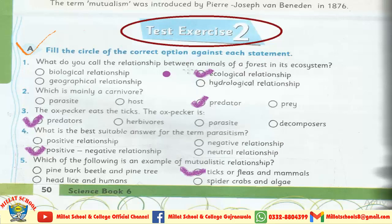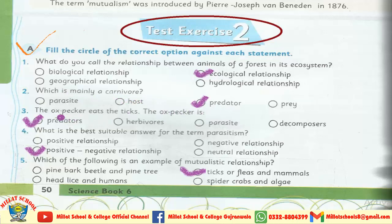Students, text exercise number 2 MCQs دیکھیے. MCQ number 1: What do you call the relationship between animals of a forest in its ecosystem? — Ecological relationship. Which is a carnivore? — Predator. The ox pecker eats the ticks; the ox pecker is a predator. What is the best suitable answer for the term parasitism? — Positive-negative relationship. Which of the following is an example of a mutualistic relationship? — Ticks or fleas and mammals.